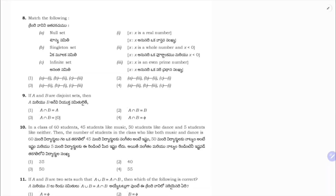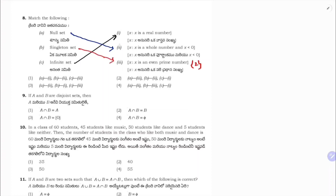Question 8: match the following — null set, singleton set, infinite set. x is a real number — it is an infinite set. x is a whole number less than 0 — whole numbers start from 0, so none exist, it is a null set. x is an even prime — even prime means only 2, so it is a singleton set. So: a→2, b→3, c→1. Correct option is 4.